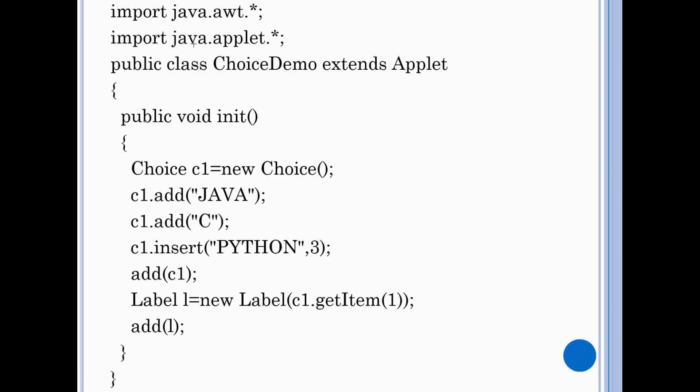This is a demonstrative program for choice in which we create one choice box with three items using applet. So let's understand the code. This is our import line and we use awt package for choice class and applet package for applet class. We use init method of applet to add components to the applet. We create choice object which is c1.